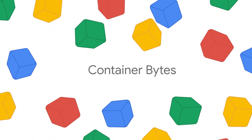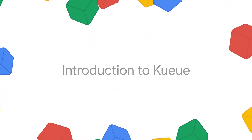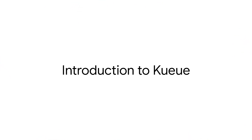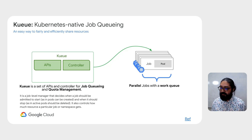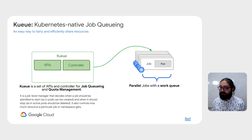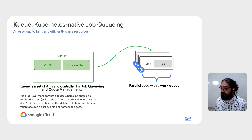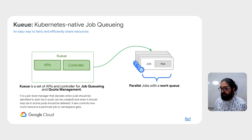In this video, we're going to learn about Kueue, an open-source project started by the Kubernetes Batch Working Group. Kueue is a Kubernetes-native job queuing and quota management system. It's a job-level manager that decides when a specific job should be admitted to start or suspended. It also controls how much resource any given workload or namespace can consume.